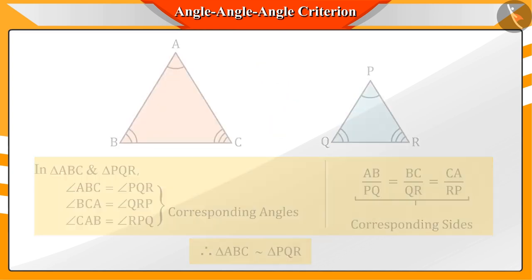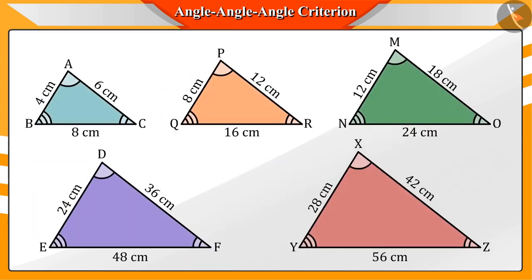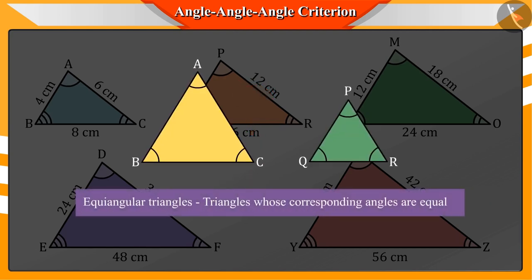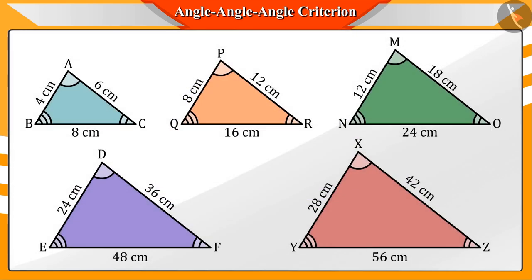Let's take the help of some equi-angular triangles. Can you tell which of these triangles would be equi-angular triangles? Absolutely correct. The triangles whose corresponding angles are equal are called equi-angular triangles.